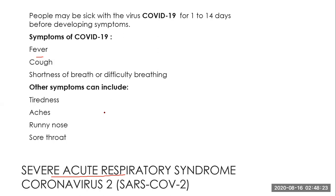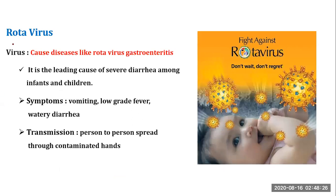The next viral disease is rotavirus. It especially affects children, including small children and infants. The virus causes rotavirus gastroenteritis. Symptoms include vomiting, low-grade fever, and watery diarrhea. Transmission occurs person to person, spreading through contaminated hands.